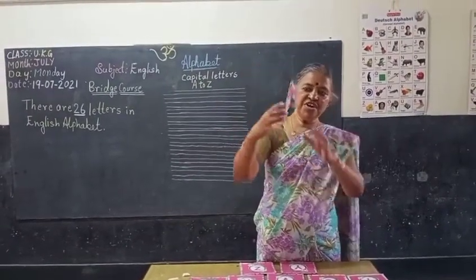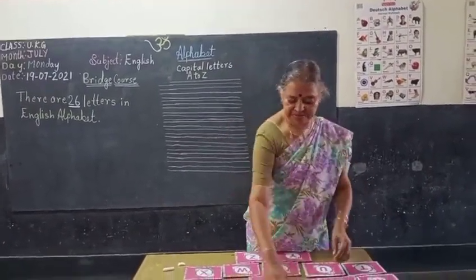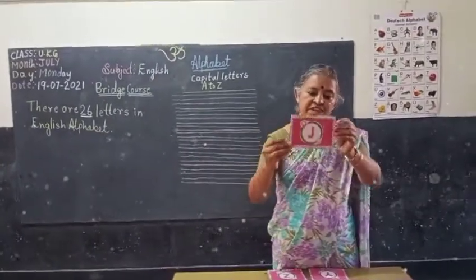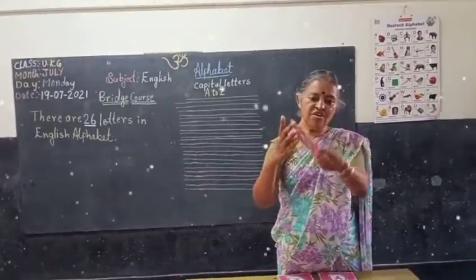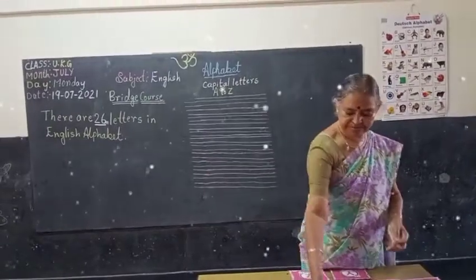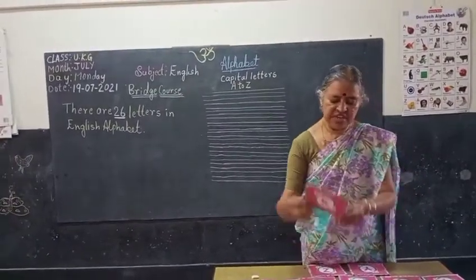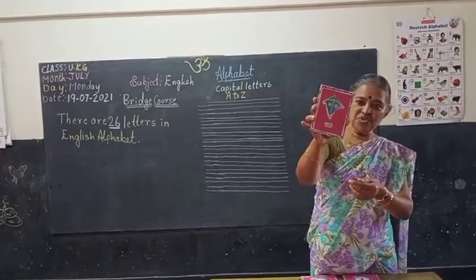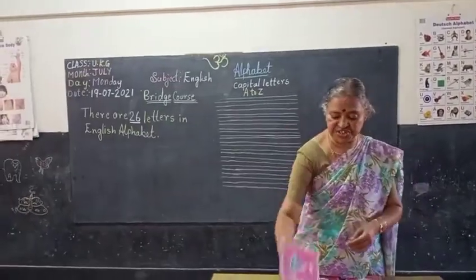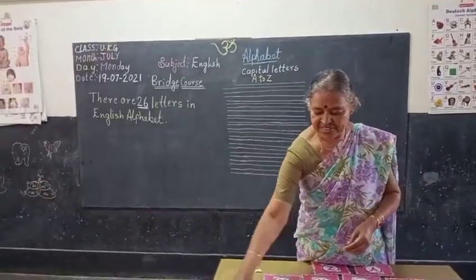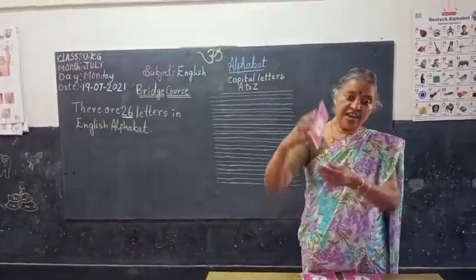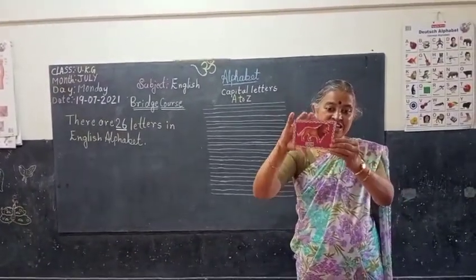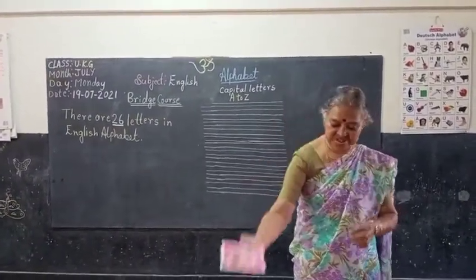F for fish. Fish is a water animal. G for girl. H for horse. I for import. J for jug. K for kite. What comes after K, children? That is L — L for lion. Lion is a wild animal.